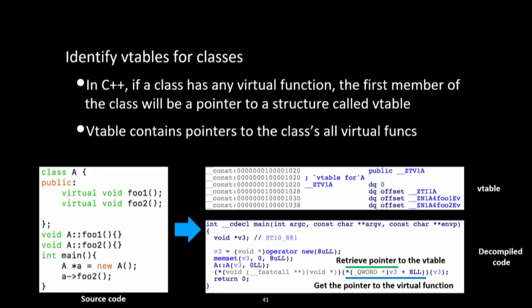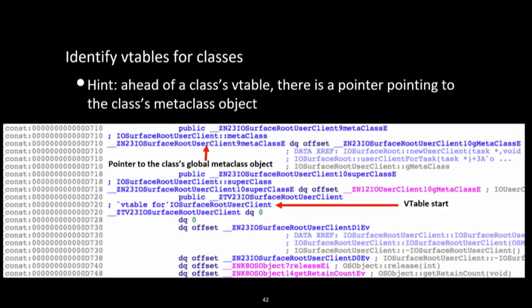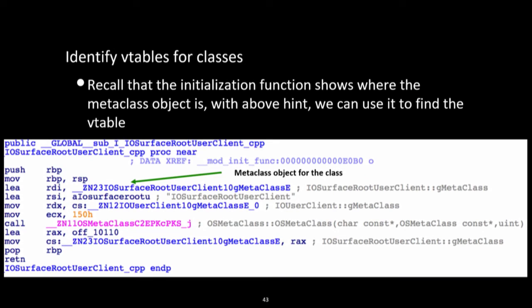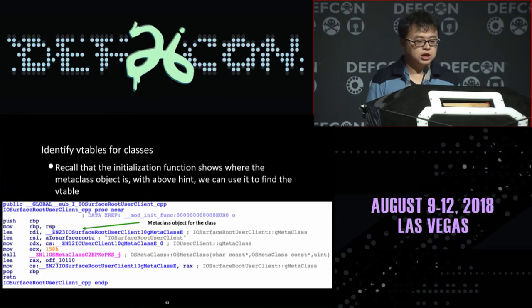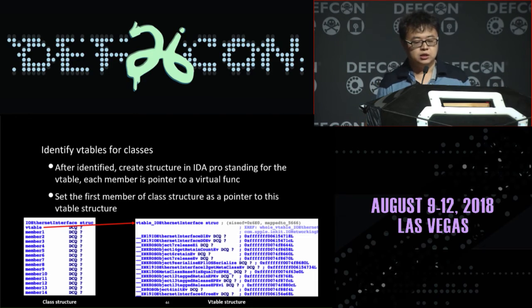RilK can also identify vtables for classes. In C++, if a class has any virtual function it always has a vtable structure to organize its virtual functions. We identify class vtables using a hint: ahead of a class vtable there is always a pointer to the class metaclass object. The initialization function also shows where the metaclass object is, so we use the metaclass address to find the vtable, then create structures in IDA Pro to represent these vtables and set the first member of class structures to a pointer to their vtables.